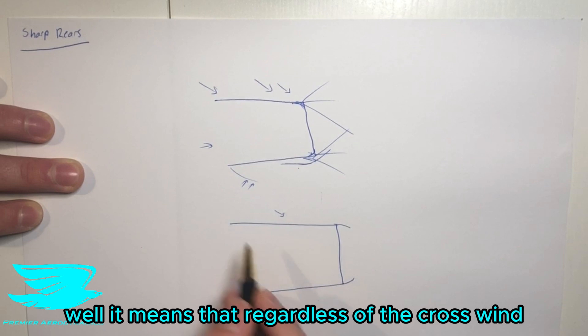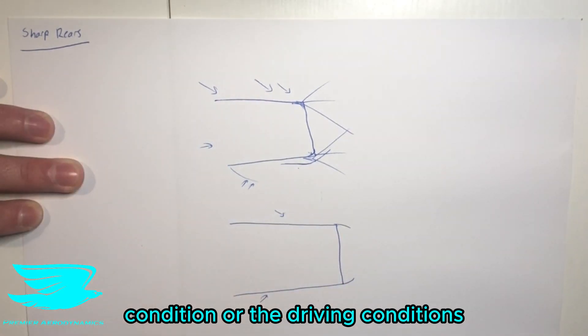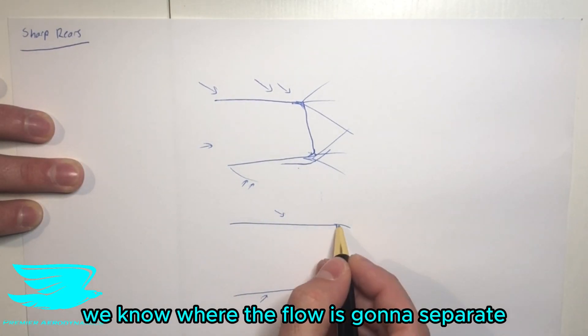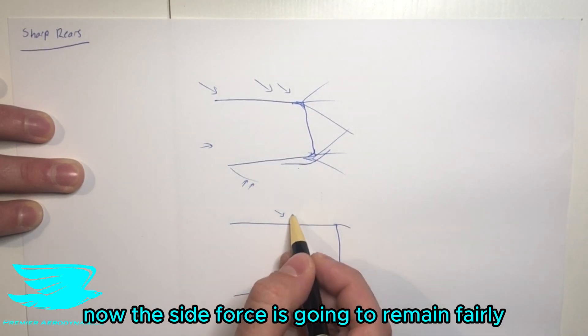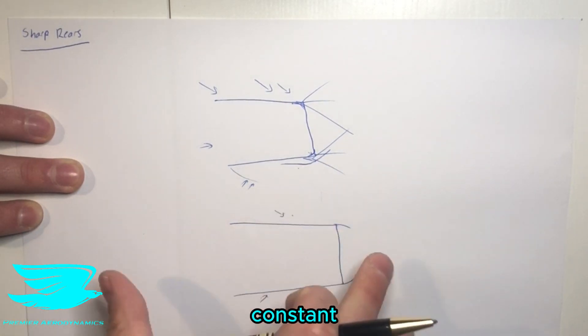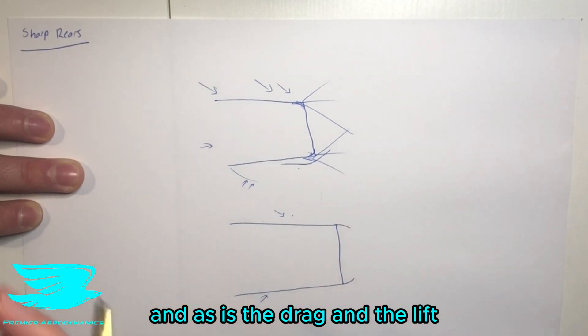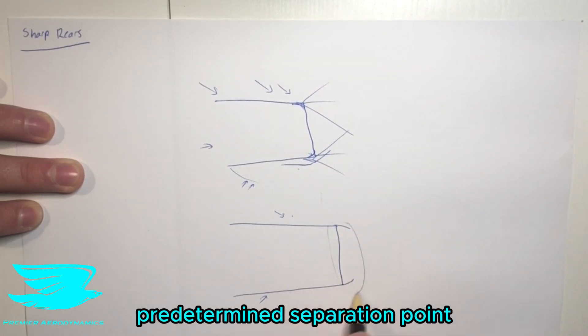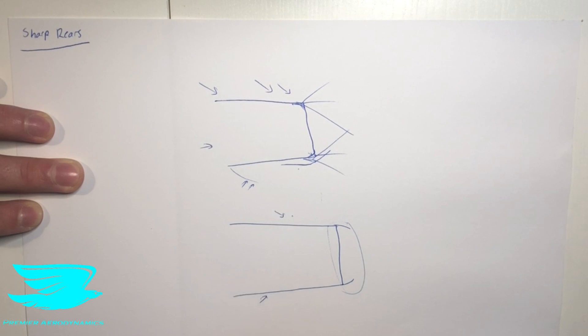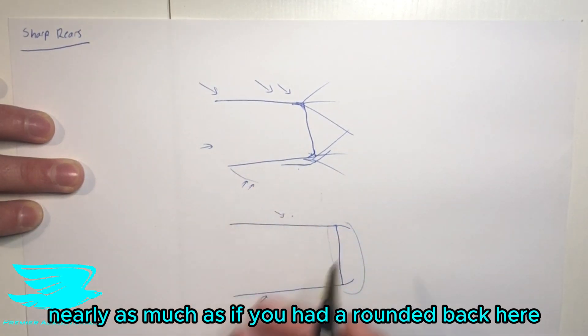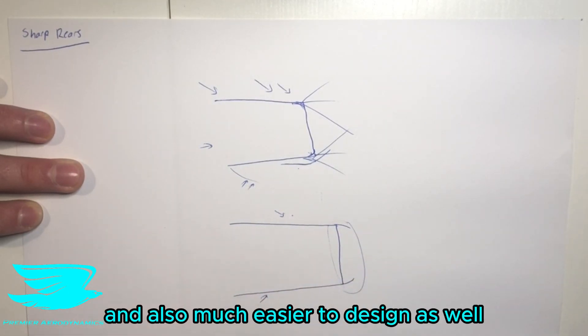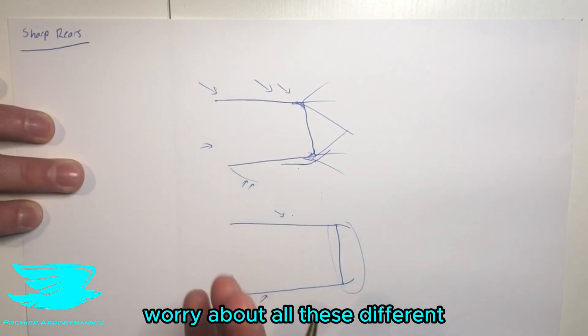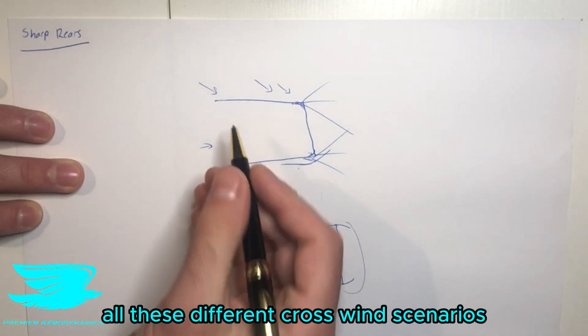So what effect does that have on the car? Well, it means that regardless of the crosswind condition or the driving conditions, we know where the flow is going to separate and the general forces on the car. The side force is going to remain fairly a bit more constant, and as is the drag and the lift, because of this predetermined separation point. That means that the forces on this car won't fluctuate nearly as much as if you had a rounded back here, and that means that it's more stable for the driver and also much easier to design.